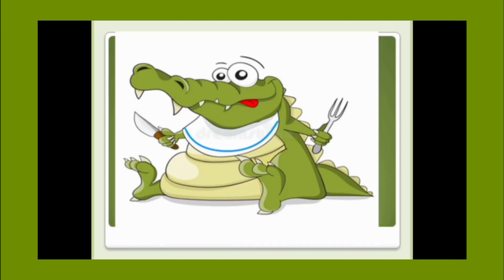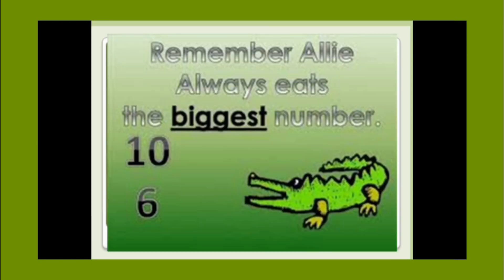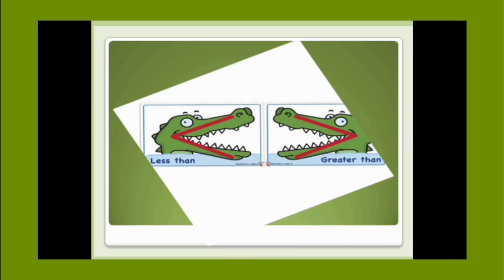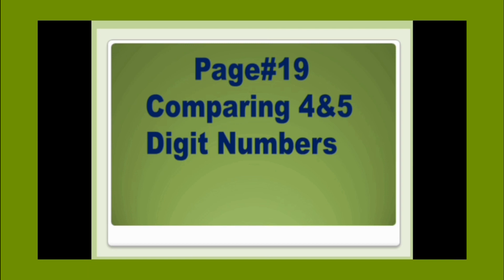Do you remember this hungry alligator who always wants to eat the biggest number? So tell me which digit he wants to eat — 10 or 6? Which one is bigger? 10 is the bigger number, so he wants to eat 10. Do you still remember these crocodile mouth shapes or symbols? What are they called? They are called less than and greater than. So today we are going to study page number 19: Comparing 4 and 5 digit numbers.